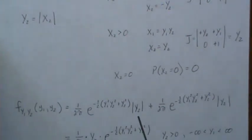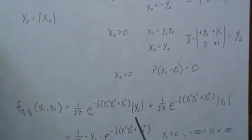Over region one, we plug in these values to the joint density of X1 and X2, which then becomes this, and it's times absolute value of Y2—that's the Jacobian.